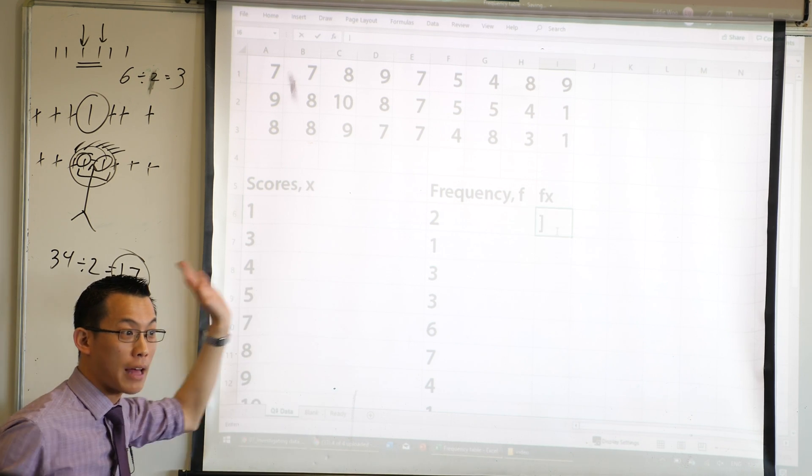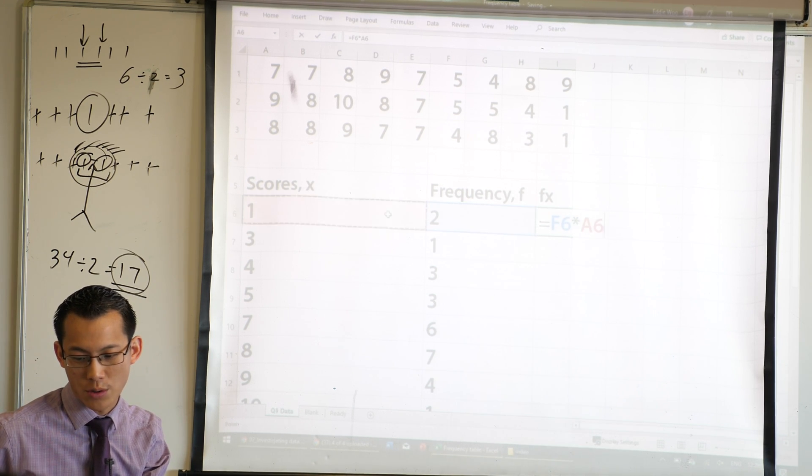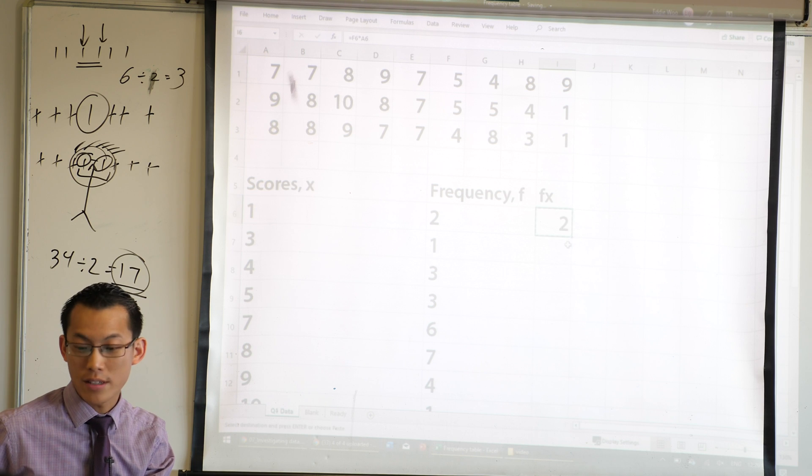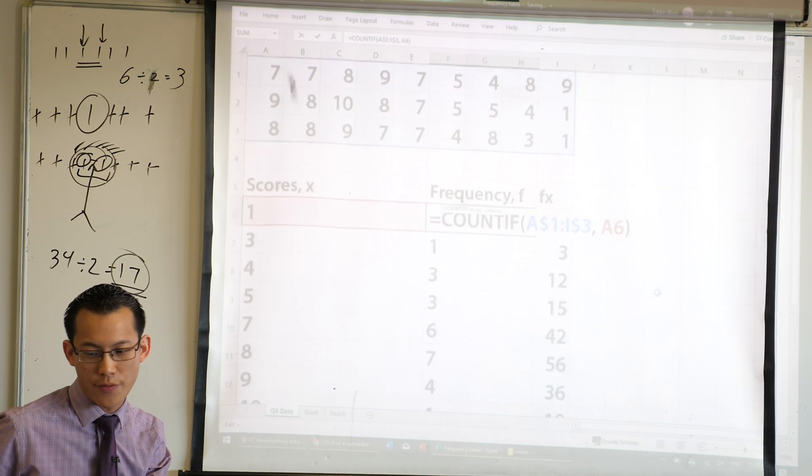I'm going to multiply across. So I'm going to say, frequency multiplied by scores. And once I've got that copied, I can go all the way down. So I will show you again what that formula looks like. It's very, very handy.